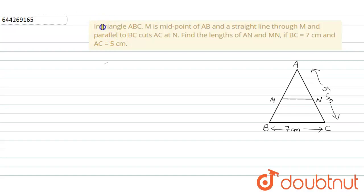In triangle ABC, M is the midpoint of AB and a straight line through M parallel to BC cuts AC at N. Find the length of AN and MN if BC equals 7 centimeters and AC equals 5 centimeters.